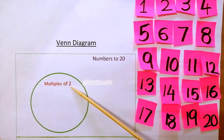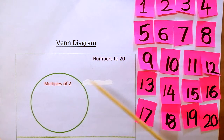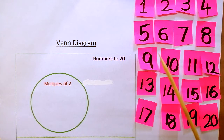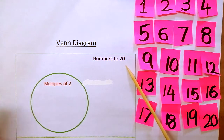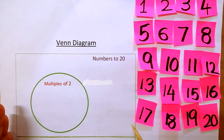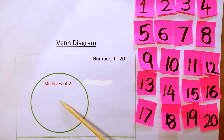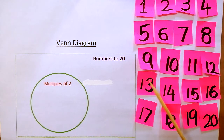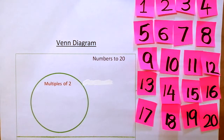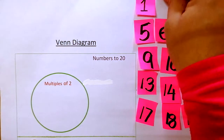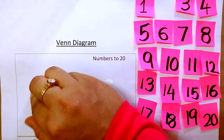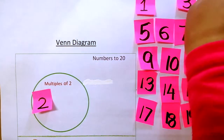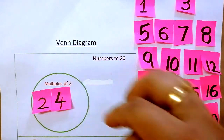Let's work on a Venn diagram with one sorting rule. Since we only need to sort multiples of two, we use only one circle. The rectangle represents the universal set — numbers 1 to 20 — so all 20 numbers must be inside the rectangular box, but the multiples of two will be sorted within the circle. You can see all 20 numbers here. Let's start: the first multiple of two is 2, then 4, then 6, then 8.